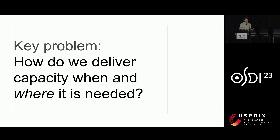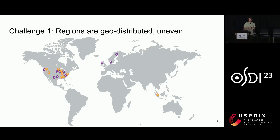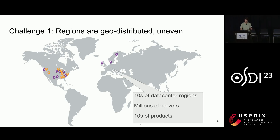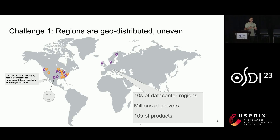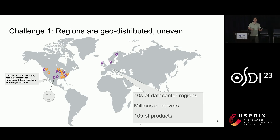Why is this a challenging problem? The first and maybe gnarliest challenge is that we're operating our global infrastructure by subdividing our capacity into many regions — in our case, more than 20 different regions. Those regions comprise millions of servers serving tens of products to billions of users. We try to route users to the region closest to them that has capacity available for the product they're accessing, in order to give them a better user experience.